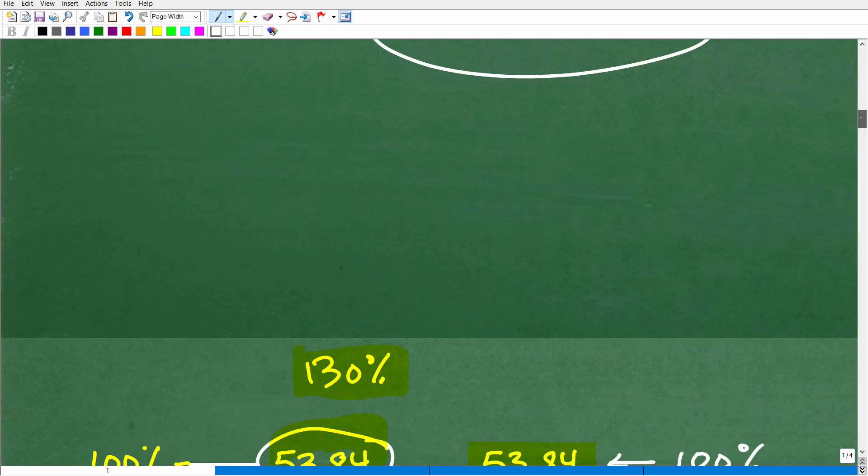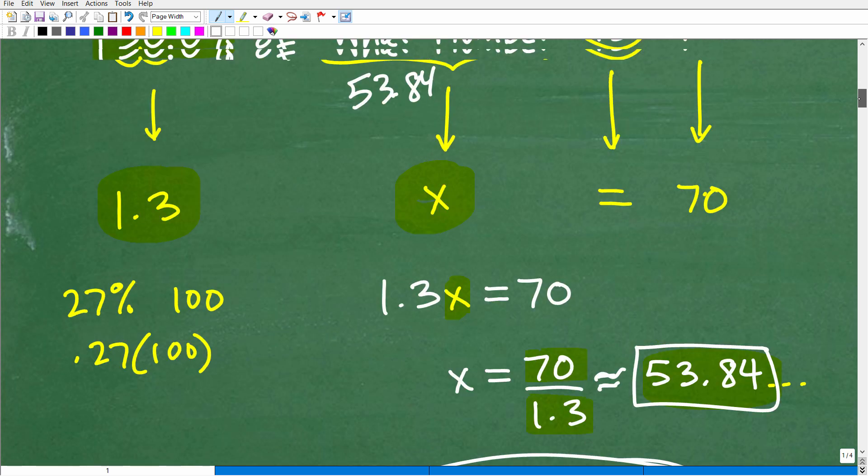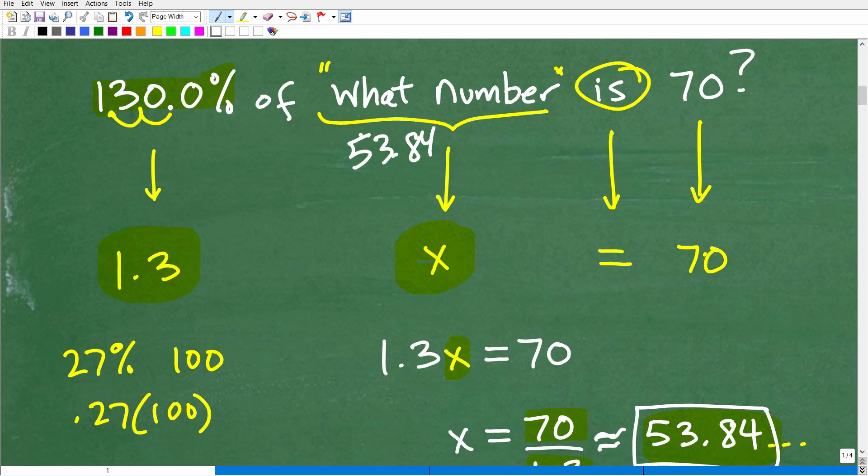Okay, and of course, let's review the problem here. 130% of what number? Of course, that was 53.84. Remember, this is an estimation here because we did round off a bit. That is, we got 69.99, but effectively, that is 70. So this is good.